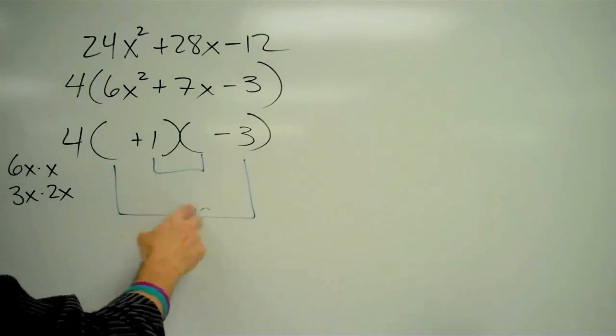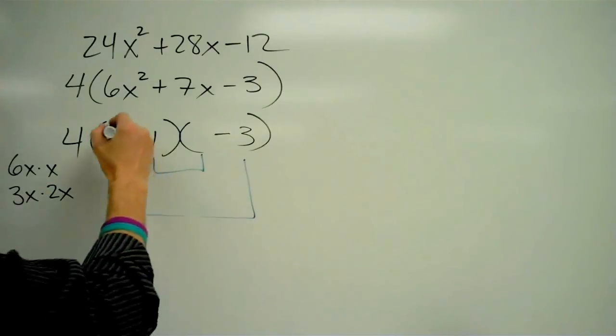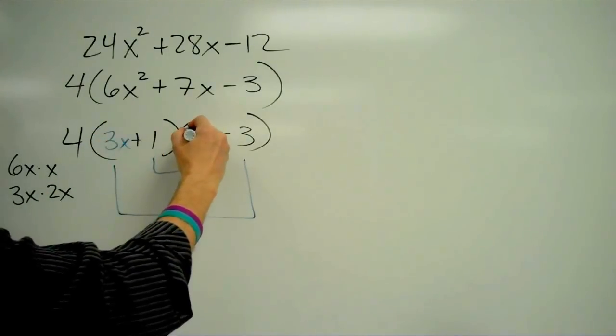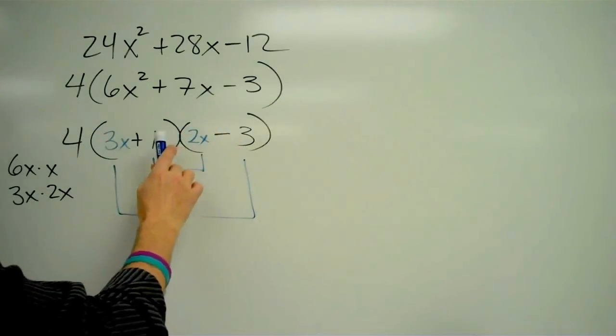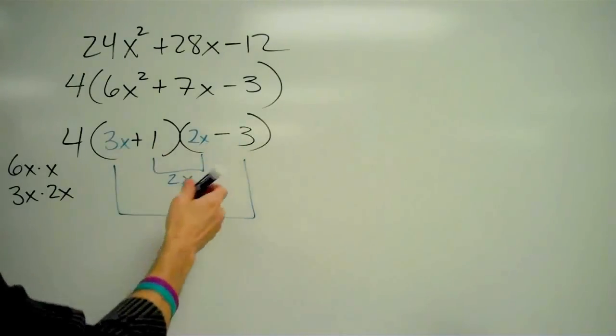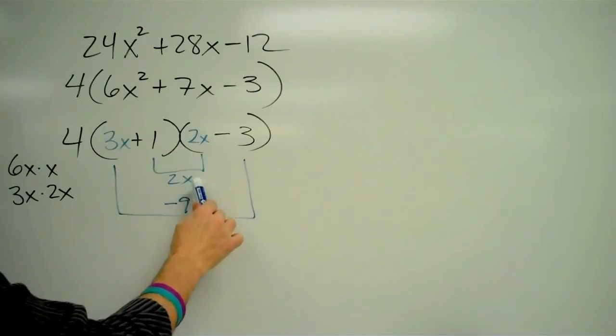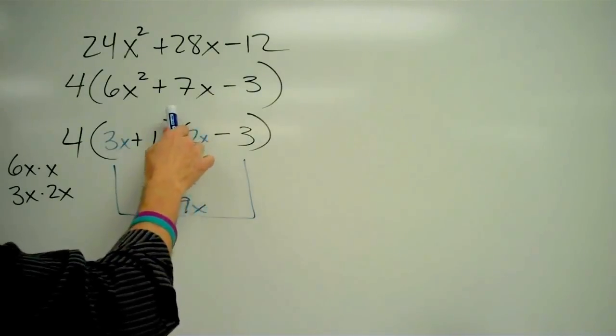That's too bad. Let me try the other ones. 3x and 2x. 2x times 1 is 2x. 3x times negative 3 is negative 9x. And so I've got 2x minus 9x is negative 7x.